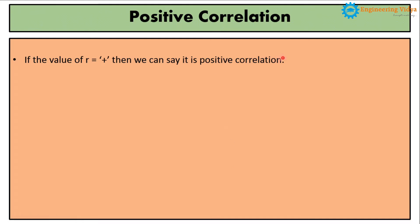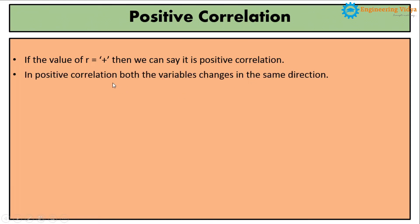The correlation is called positive correlation if the calculation of coefficient of correlation is positive. Coefficient of correlation is nothing but the value of small r. If the value of small r is positive then we can say the correlation is positive. And always remember that if the correlation is positive, both the variables x and y will change in the same direction.